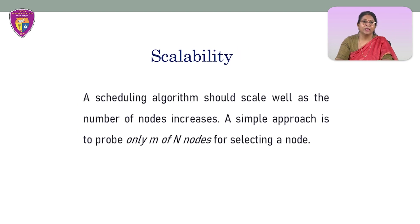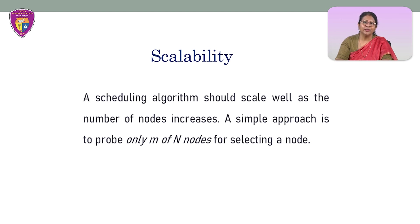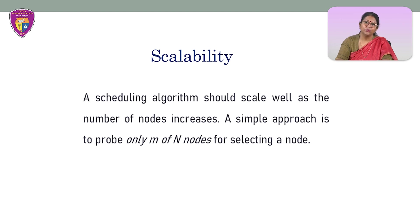The algorithm should also be scalable. A scheduling algorithm should scale well as the number of nodes increases. An algorithm that makes scheduling decisions by first inquiring the workload from all the nodes and then selecting the most lightly loaded node has poor scalability. This works fine only when there are few nodes in the system, because the inquirer receives a flood of replies almost simultaneously, and the time required to process those reply messages for making a node selection becomes too long as the number of nodes n increases.